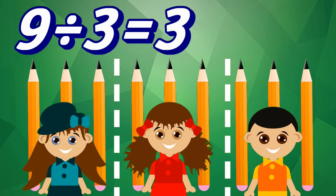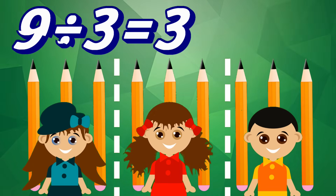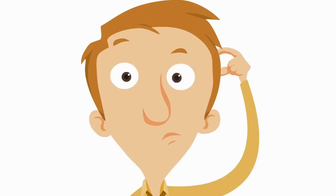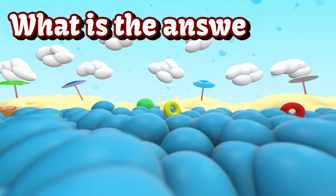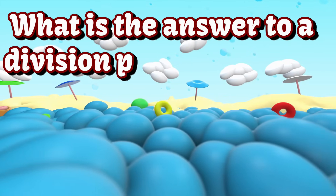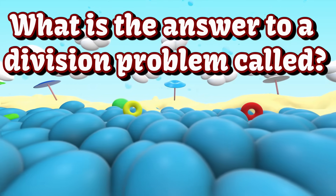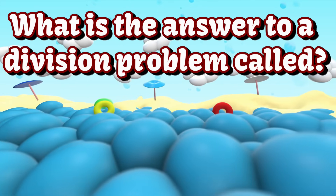If you split nine into equal groups of three, there are three in each group. Nine divided by three equals three. Awesome job. Before we practice more division, I want to ask you a quick question. What is the answer to a division problem called?